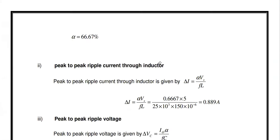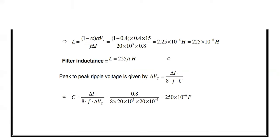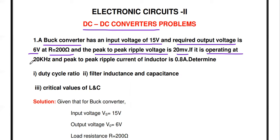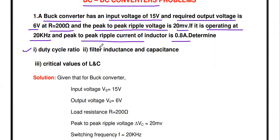The first problem is related to the buck converter. A buck converter has an input voltage of 15V and a required output voltage of 6V at a load resistance R = 200 Ω. The peak-to-peak ripple voltage is 20 millivolts, the frequency is 20 kHz, and the peak-to-peak ripple current through the inductor is 0.8 amps. Determine: duty cycle, filter inductance and capacitance values, and critical values of inductor and capacitor.